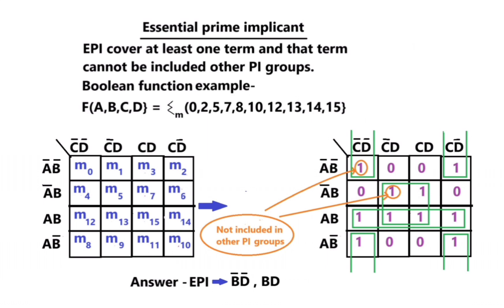A Boolean function example is given here for function f(a, b, c, d) equal to minterms 0, 2, 5, 7, 8, 10, 12, 13, 14, and 15.